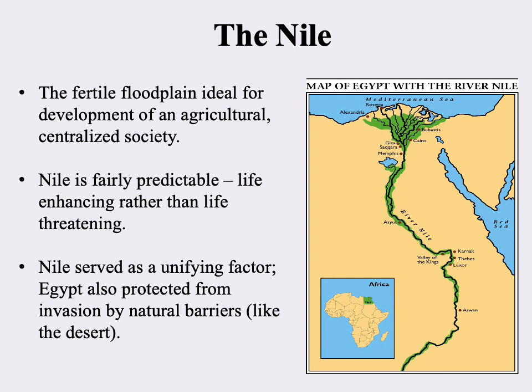That might be a factor in how the ancient Egyptians conceive of the divine — very different than Mesopotamians, much more nurturing gods and goddesses. Because the Nile is so tame, it's very easy to move up and down it, so it probably served as a unifying factor, with people all along the Nile developing a shared culture and shared identity.